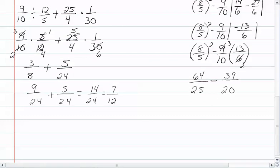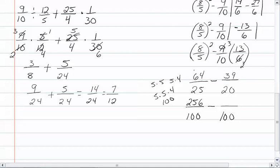We need a common denominator for twenty-five and twenty. We get five times five and five times four, so we need five times five times four, which is one hundred. Twenty-five times four gives us one hundred, so we have sixty-four times four, which gives us two-hundred-fifty-six over one hundred, minus five times twenty, which gives us one hundred, and five times thirty-nine is one-hundred-ninety-five over one hundred. That leaves us with sixty-one one-hundredths.